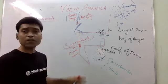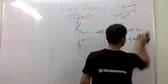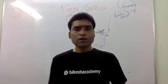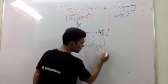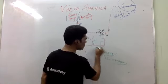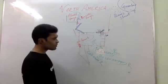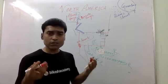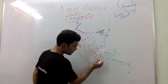Now we will focus on the rivers of North America. I am discussing only the important features. The longest river system is the Missouri–Mississippi. You will also find the Colorado River here. They fall into the Gulf of Mexico — so if they ask which sea, bay, or ocean these rivers drain into, the answer is the Gulf of Mexico.